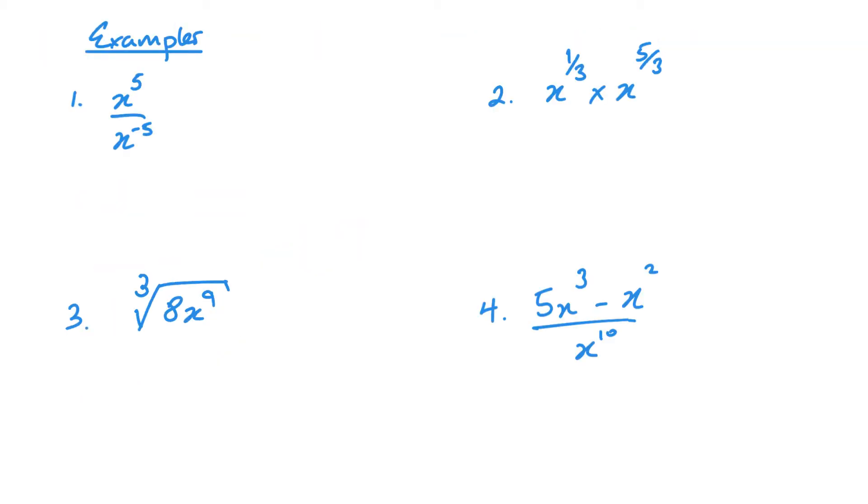What we'll start with is using the rules that we used in unit 1.1. So if I look at this one, it's just going to be x to the 5 minus minus 5, so it's going to be x to the 10. Nothing difficult there.